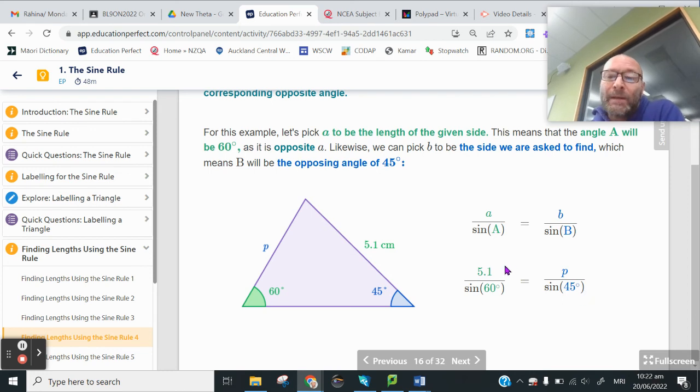So the answer is going to be 5.1 times the sine of 45, and then take that answer, divide by the sine of 60, and that's going to be how we find P.